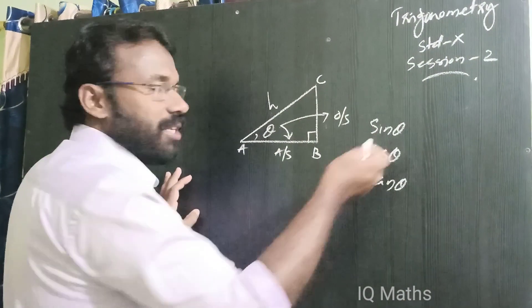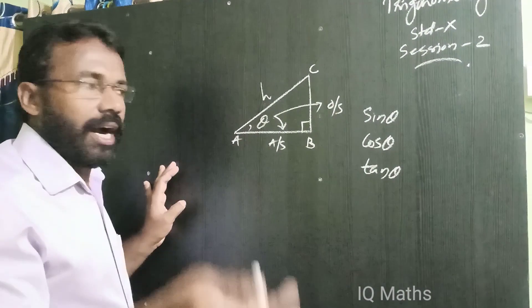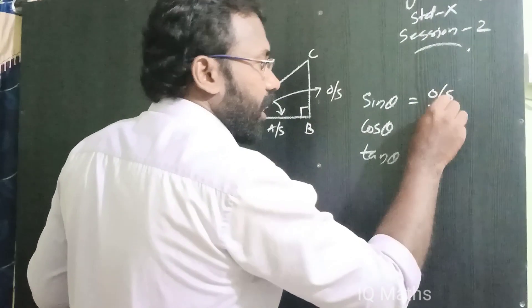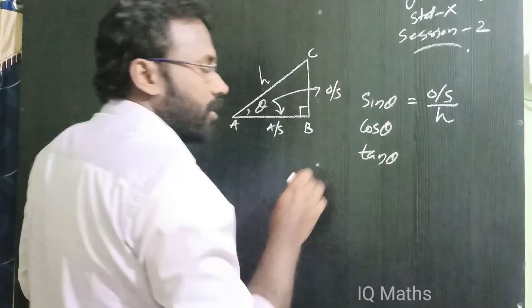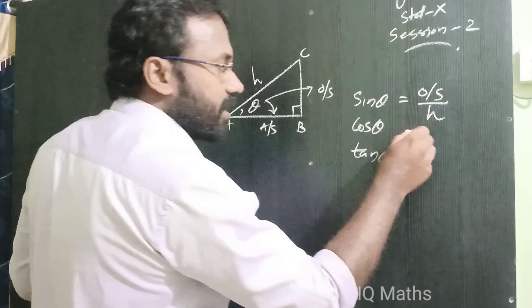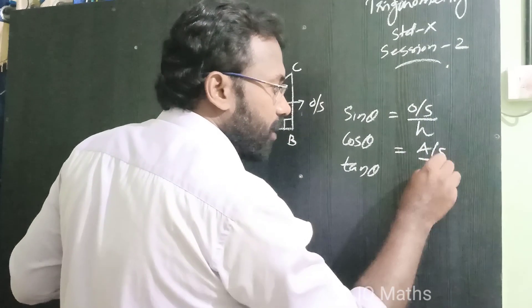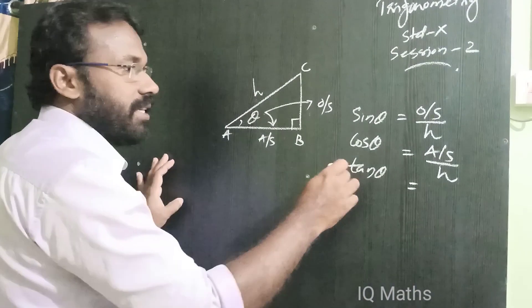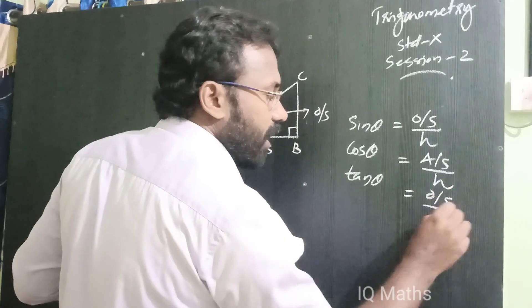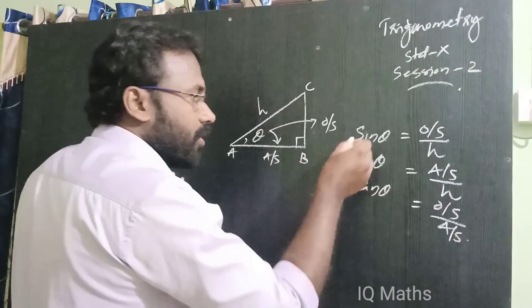What will be sin theta? Opposite side by hypotenuse. Cos theta is adjacent side by hypotenuse. Tan theta is opposite side by adjacent side.